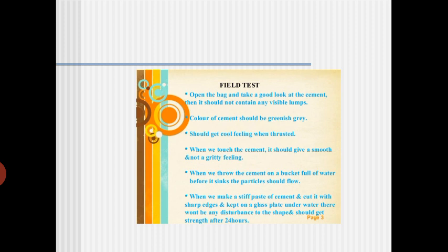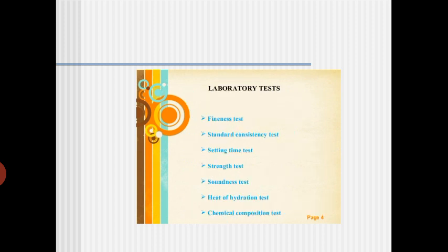Laboratory tests on cement include: (1) fineness test, (2) standard consistency test, (3) setting time test, (4) strength test, (5) soundness test, (6) heat of hydration test, and (7) chemical composition test. We will cover these in the next class, going a little fast since you already covered them in your UG classes. Thank you.